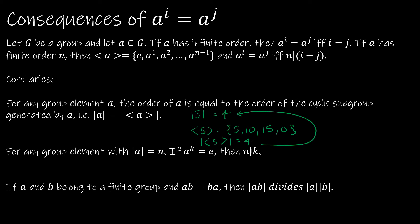The next corollary: for any group element with order of a equal to n — remember, if the order of a is n, that means a to the n equals e — if a to the k is also equal to e, then n divides k. If the order of a is n, then n is the smallest value such that a to the n equals e. So if a to the k also equals e, then k is some multiple of n. For instance, if the order of a is 3, then a to the 3rd equals e, but also a to the 6th equals e, a to the 9th equals e, and so on. If a to the 21st equals e, then 3 must divide 21 — which seems pretty straightforward.